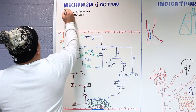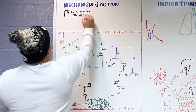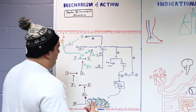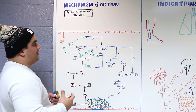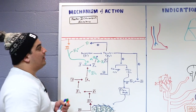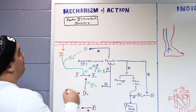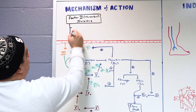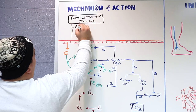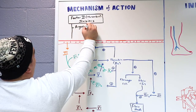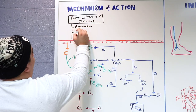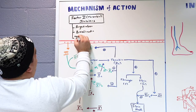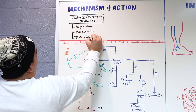There are three specific types of factor 2 inhibitors. We'll discuss when to use these compared to heparin and warfarin — these medications are becoming more commonly used and preferred. The three main drugs are argatroban, bivalirudin, and dabigatran.